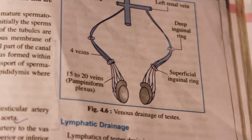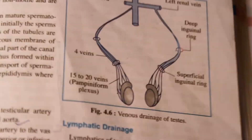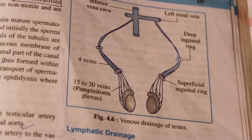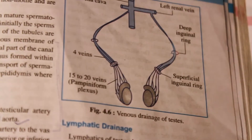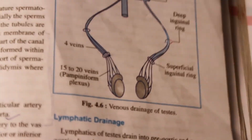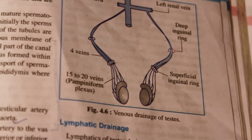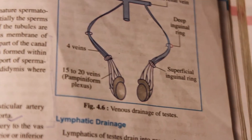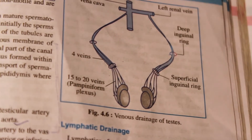Now we have to know about the descent of the testis. The testis is developed in the posterior abdominal wall and is connected with the gubernaculum testis, which connects the upper border of the testis with the scrotum. Descent of testis starts from the 4th month of intrauterine life. In the 4th month it descends into the iliac fossa, in the 7th month it reaches the deep inguinal ring, it passes through the inguinal canal in the 8th month, and finally reaches the scrotum just before birth.